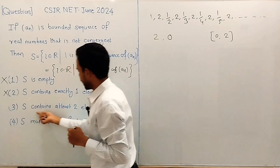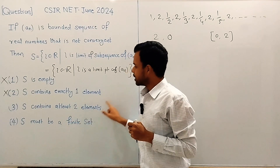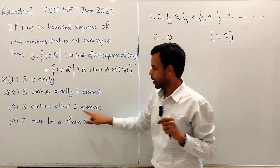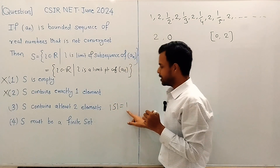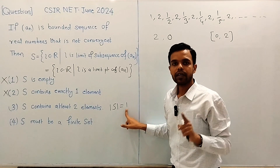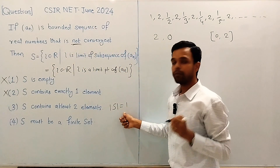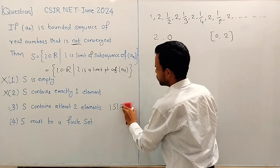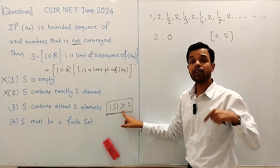Let us see option three: does S contain at least two elements? Yes, this is a true statement. Suppose S contains less than two elements — since S is non-empty, S must contain exactly one element. But we know that if a bounded sequence of real numbers has exactly one limit point, then that sequence is convergent. However, A_n is given to be not convergent, so it must have more than one limit point. Therefore, the cardinality of S must be strictly greater than one.